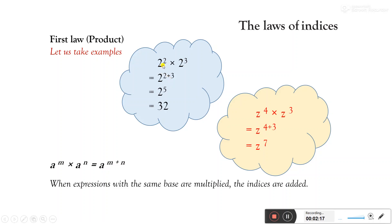For example, 2 to the power 2 multiplied by 2 to the power 3: they have the same base 2, so we add their powers — 2 plus 3 — which equals 2 to the power 5, whose value is 32. Similarly, z to the power 4 multiplied by z cube: same base z, so powers are added — 4 plus 3 — equals z to the power 7. When expressions with the same base are multiplied, the indices are added.